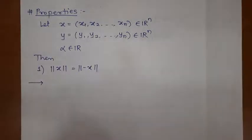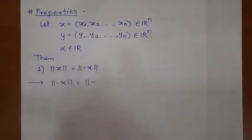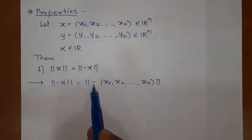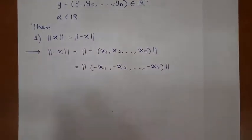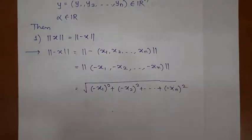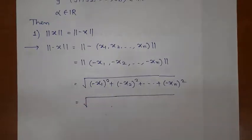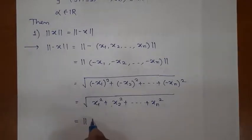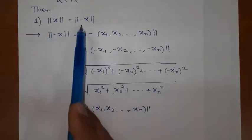We are going to prove this. Starting with the right-hand side: norm of (−x) = norm of (−x1, −x2, ..., −xn). By the definition of norm, this equals the square root of (−x1)² + (−x2)² + ... + (−xn)². When we take the square, the minus sign vanishes, so this becomes the square root of x1² + x2² + ... + xn², which is exactly the definition of norm(x). Thus, norm(x) = norm(−x), proving the first property.